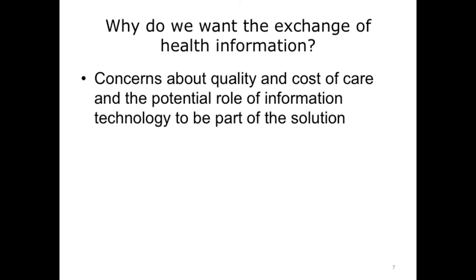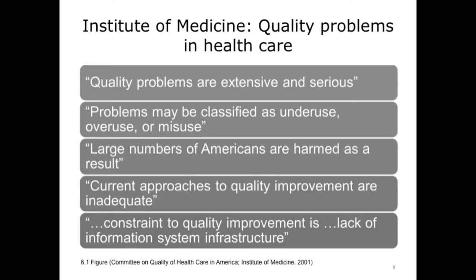Why do we want Health Information Exchange? Over the last several years, there have been increasing concerns about the quality and cost of health care and the potential role that health information technology could play as part of the solution. In the year 2000, the Institute of Medicine published a report titled Crossing the Quality Chasm, which identified that quality problems are extensive and serious, that health care quality problems could be classified as underuse, overuse, or misuse, and that large numbers of Americans are harmed as a result. The report also noted that current approaches to quality improvement are inadequate, and identified the lack of adequate information infrastructure as a key constraint.